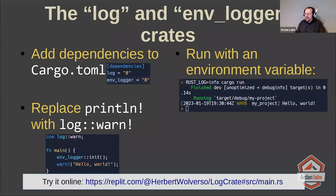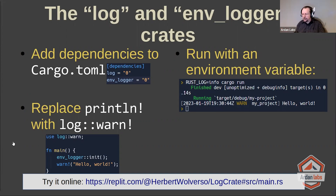Envlogger allows you to customize what will actually be printed. Using this setup, you can indicate that with the WARN macro — that's using the warning level. There's an error macro, an info macro. And then when you run it, you set RUST_LOG equals the level of log you want, then cargo run. That way, it's only logging exactly the amount of data that you find you need.